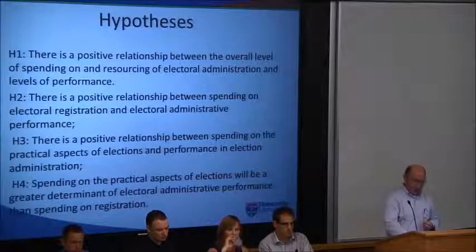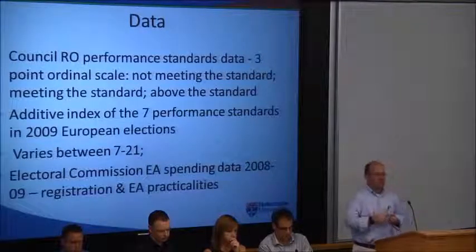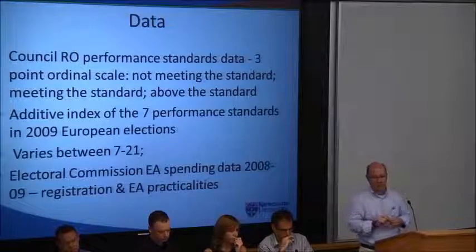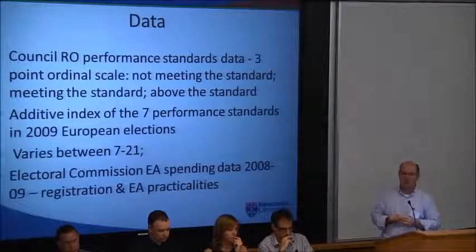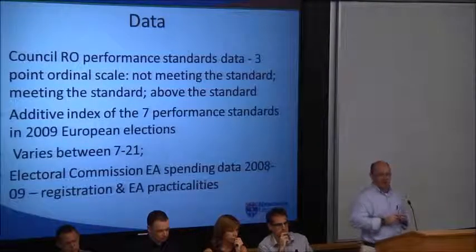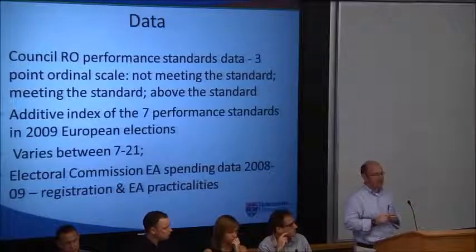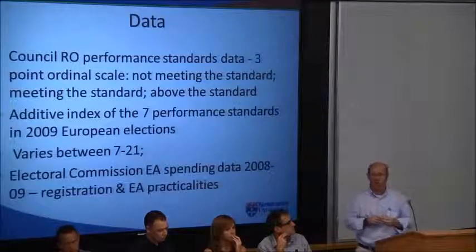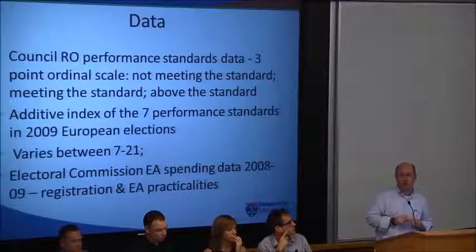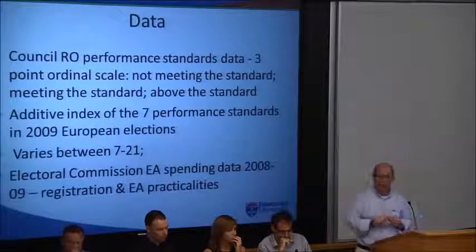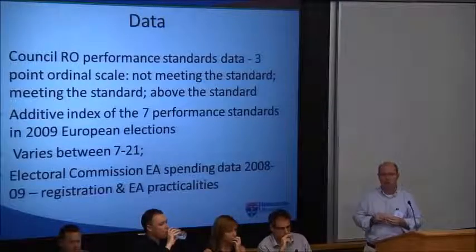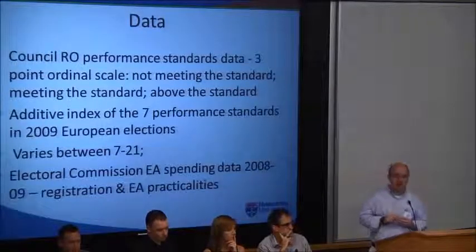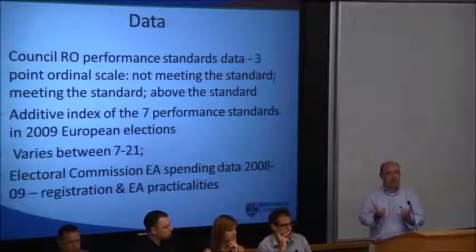We're in the fortunate position in the UK that the Electoral Administration Act of 2006 mandated the UK Electoral Commission to start collecting data on returning officers' performance standards — the administrators who deliver elections in local councils — but also on the financing of electoral administration across the country. These performance standards are typically a three-point ordinal scale: not meeting the standard, meeting the standard, or above the standard. I've developed this into an additive index of the seven performance standards — in this paper covering the 2009 European elections. This index can vary between 7 and 21, and I've brought it together with the spending data from the Electoral Commission. The paper actually deals with 2008–2009 spending data.